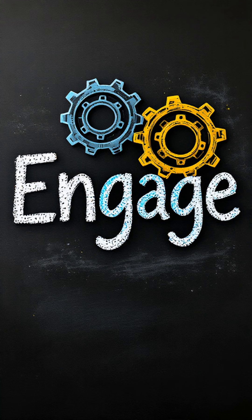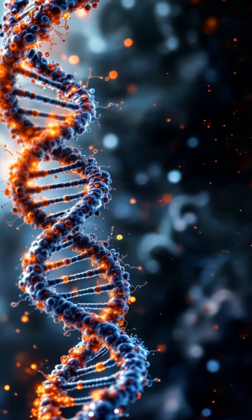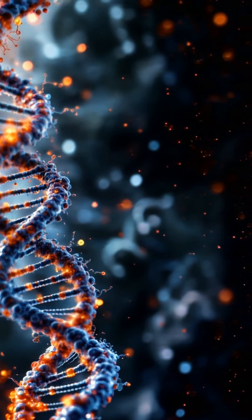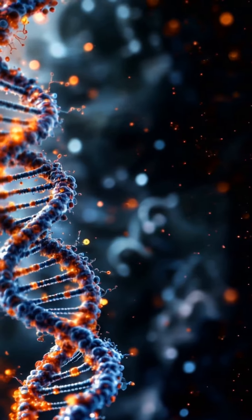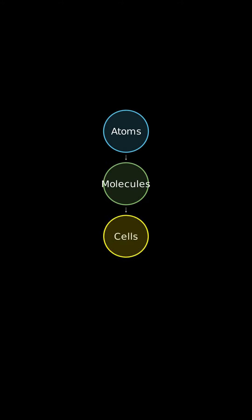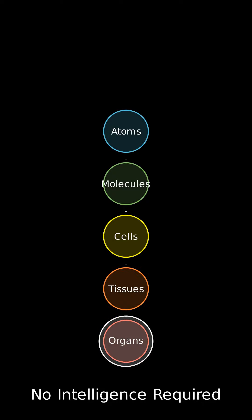To debunk ID, critics would need to engage with its claims — such as specified complexity in DNA or irreducible complexity in biological systems — and show how these phenomena can be explained by naturalistic processes without resorting to intelligence.